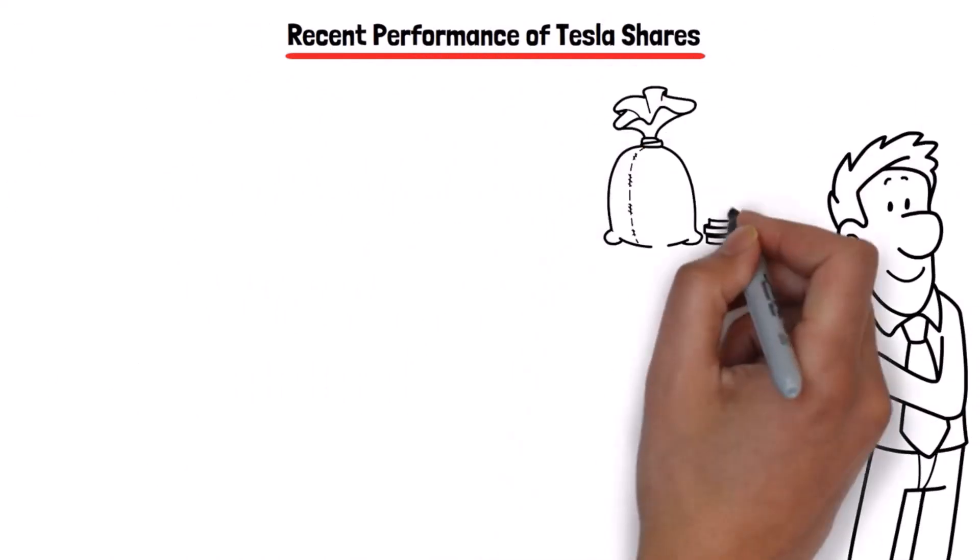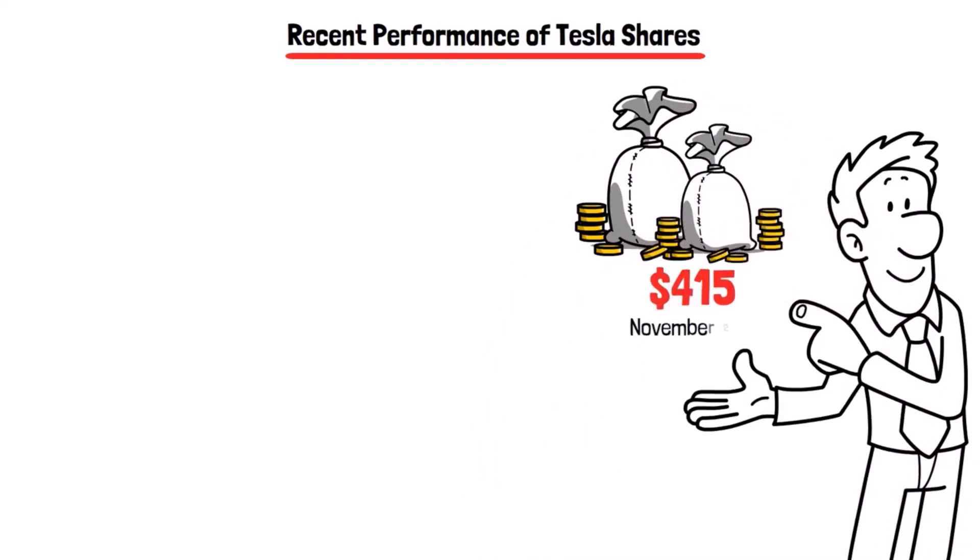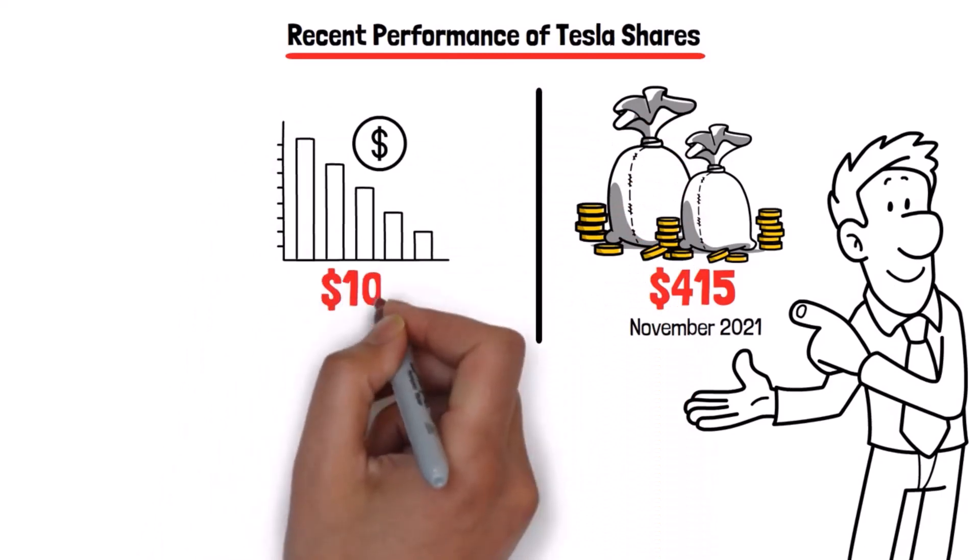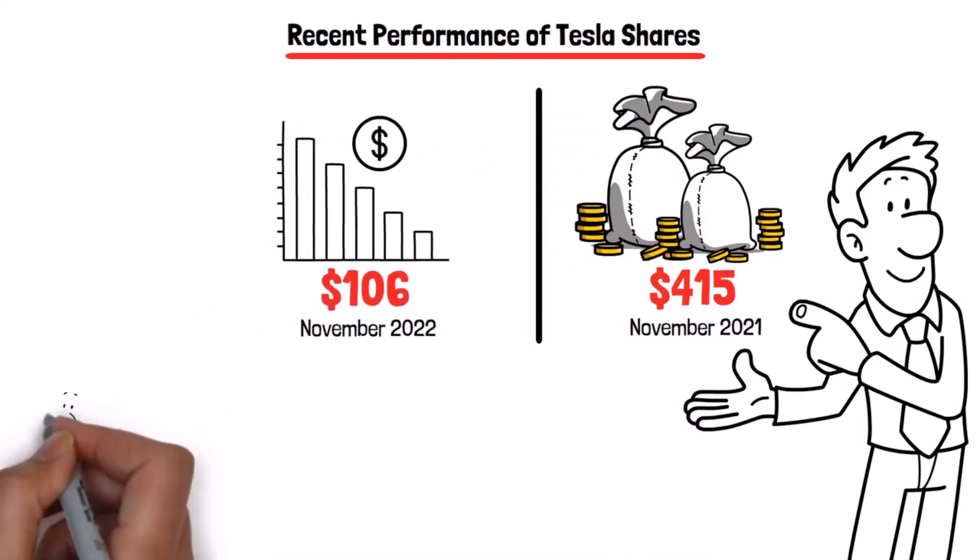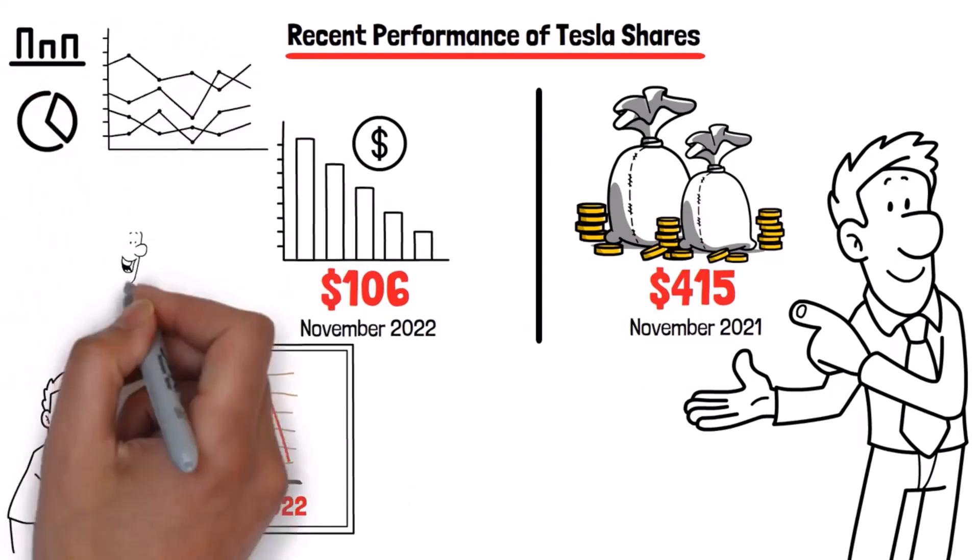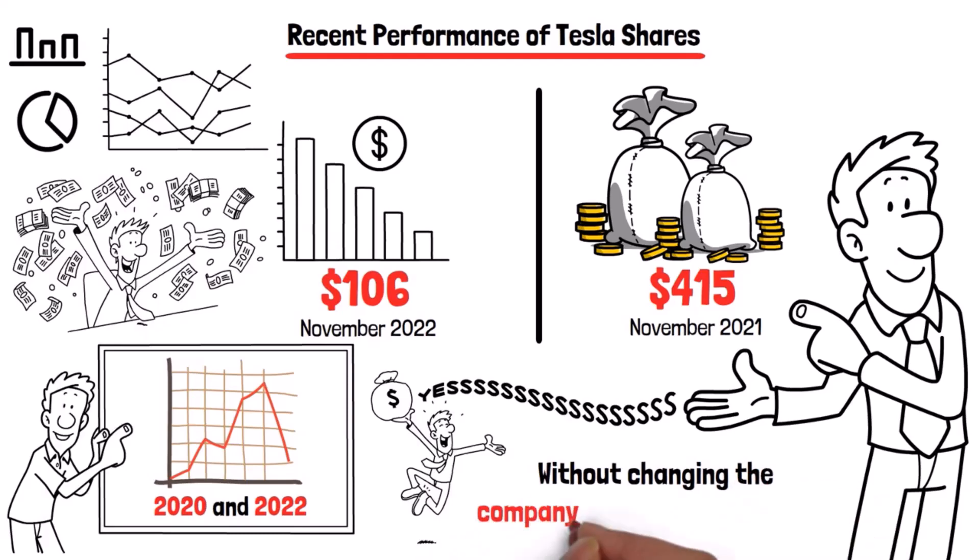Recent performance of Tesla shares. Now let's talk numbers. Tesla's shares have seen a dramatic journey, hitting a peak of $415 in November 2021 and then dipping to a low of $106 in 2022. These fluctuations are partly due to two stock splits in 2020 and 2022 designed to make the stock more accessible. Stock splits increase the number of shares in circulation, making them more affordable for retail investors without changing the company's overall market value.